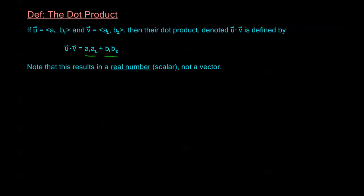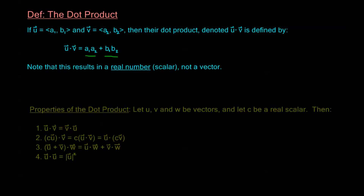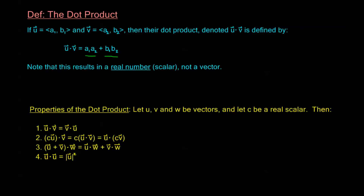Now let's see some of the properties associated with the dot product. Let u, v, and w all be vectors, and let c be a real scalar. Then we have these four properties. First, the dot product is commutative: u dot v is equal to v dot u.